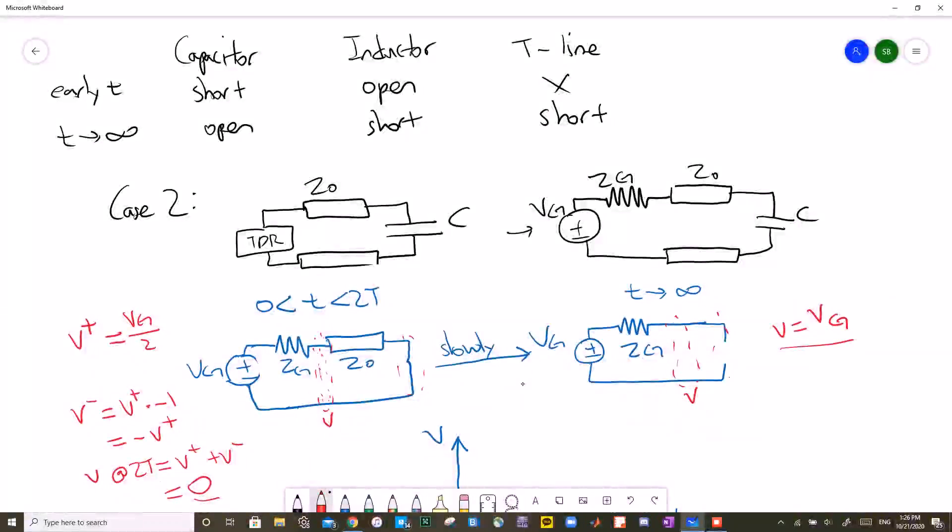Now let's take a look at case number two. It is a TDR connected to a transmission line with a capacitor as a load. How do we deal with reactive components in these cases? Well, all we need to look at are the boundary conditions. When time goes from 0 to 2T, we know that the voltage at the generator end can only perceive the capacitor as a short because the time is still early. So we can draw it as a short.